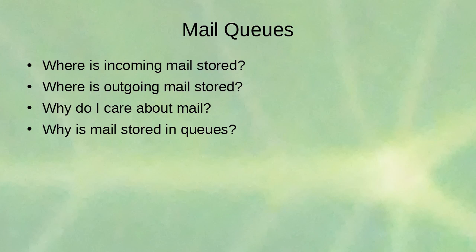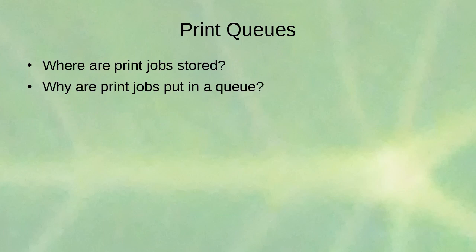Mail uses queues because it involves a lot of waiting and moving. Print jobs are stored in the /var/spool/cups directory. Right now I don't have a print server configured, but if I were sending print jobs you'd see them there. Why are print jobs put in a queue? Printers don't always have enough space for all the print jobs they receive at once, so you send them to a queue and the spool slowly feeds jobs to the printer as it's ready. This ensures you don't lose print jobs. That's our overview of system logs and queues.